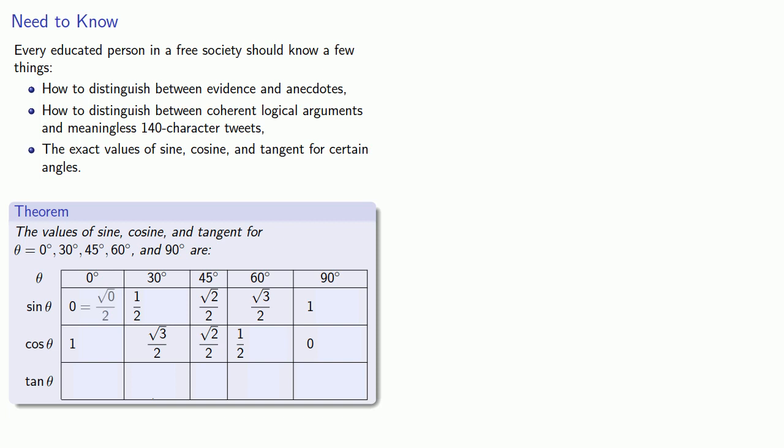So let's rewrite them. 0 is the same as square root of 0 over 2. 1 half is the same as square root of 1 over 2. And 1 is really square root of 4 over 2. And so our sine values form this nice progression: square roots of 0, 1, 2, 3, or 4 over 2.